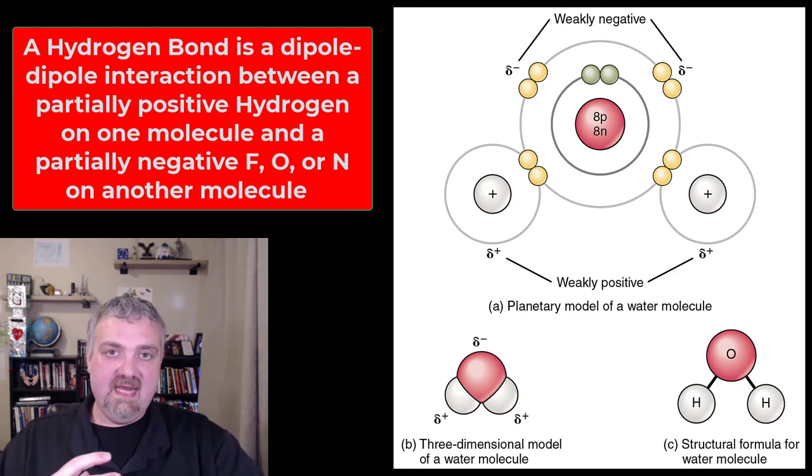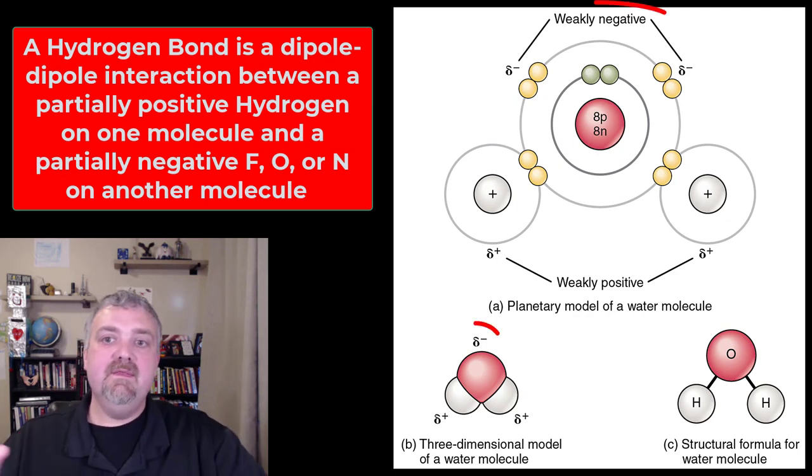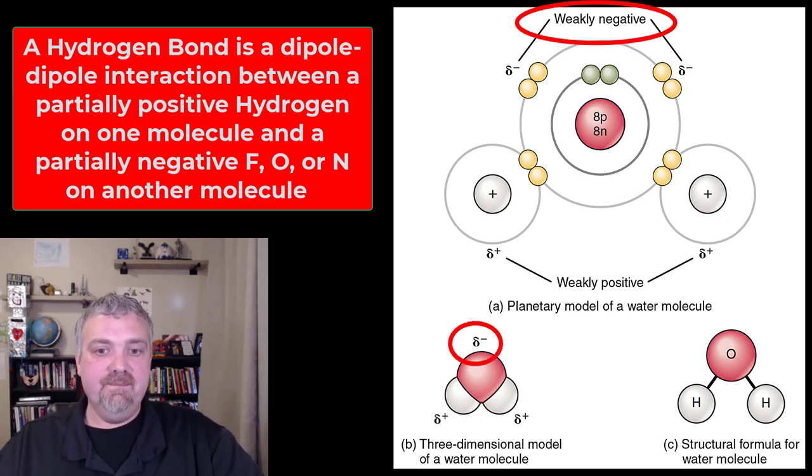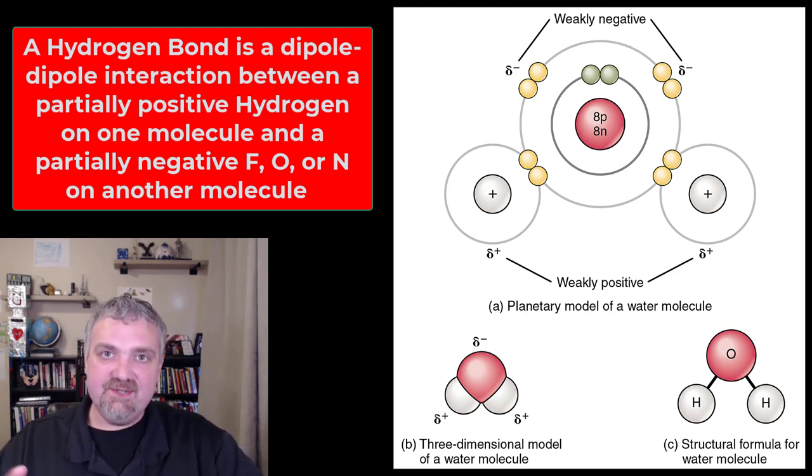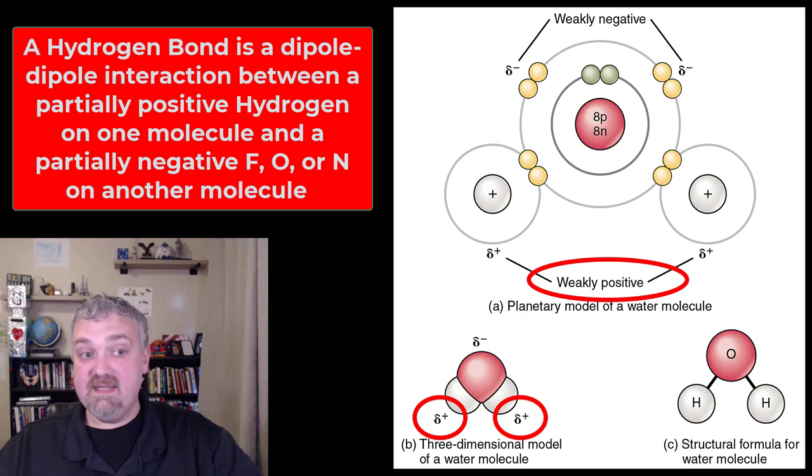Because the negative electrons are going to spend more time near oxygen because it's so big and has so many positive protons to pull them, the oxygen side of water is going to be partially negative. And because hydrogen is so weak, it's losing its electron more often than it's receiving in the sharing relationship, so they're going to have a partial positive charge.